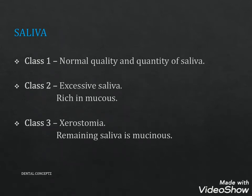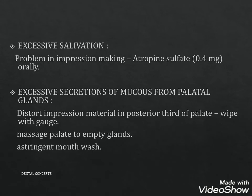For saliva, Class 1 is normal quality and quantity. Class 2 has excessive salivary secretion rich in mucus. Class 3 is characterized by xerostomia with the remaining saliva being mucous in nature. Excessive salivation creates problems in impression making; atropine sulfate can be given orally to reduce salivary flow. Excessive secretions of mucus from palatal glands distort impression material in the posterior third of the palate — to reduce this, it should be wiped with a gauze, the palate can be massaged to empty glands, or an astringent mouthwash can be used.